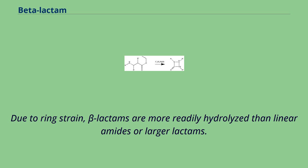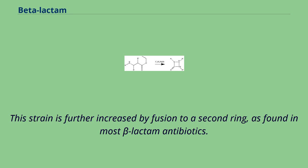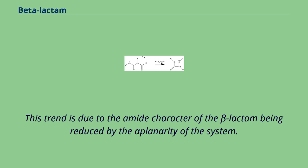Due to ring strain, beta-lactams are more readily hydrolyzed than linear amides or larger lactams. This strain is further increased by fusion to a second ring, as found in most beta-lactam antibiotics. This trend is due to the amide character of the beta-lactam being reduced by the aplanarity of the system.